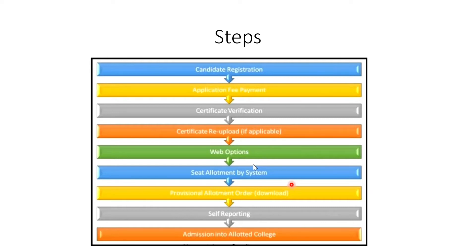So these are the steps: first we register, then we pay the fee, then we upload the certificates. Then web options open, then we have seat allotment, then we receive an allotment order. You can download the allotment order, then submit to the university and pay the college fee. Once confirmed as a college student, you register for the PhD and the actual process starts.